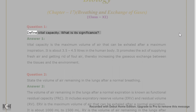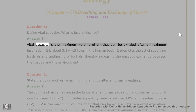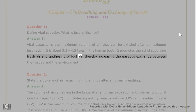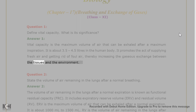Question 1: Define vital capacity. What is its significance? Answer 1: Vital capacity is the maximum volume of air that can be exhaled after a maximum inspiration. It is about 3.5 to 4.5 liters in the human body. It promotes the act of supplying fresh air and getting rid of foul air, thereby increasing the gaseous exchange between the tissues and the environment.